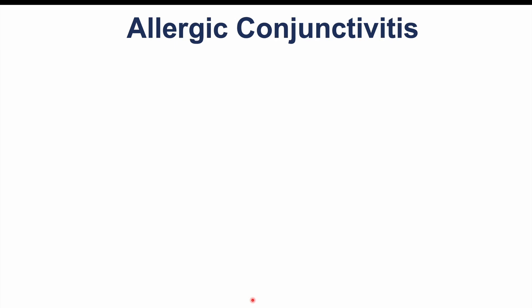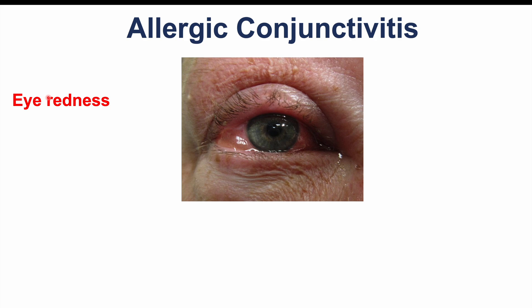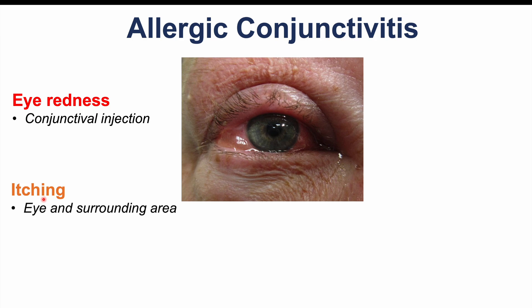Let's talk about allergic conjunctivitis. Signs and symptoms include eye redness and conjunctival injection, which is simply a term for dilated or inflamed blood vessels in the eye. There may be some dilated blood vessels visible in patients who have allergic conjunctivitis. Itching is actually a characteristic finding in allergic conjunctivitis — the eyes are going to be very itchy with this condition.